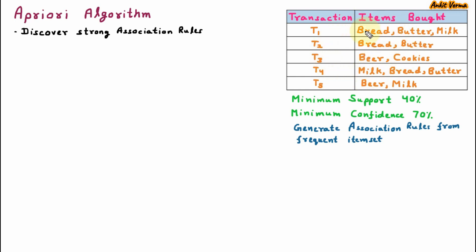Here we are given with a dataset in which we have transactions and items bought. There are five transactions. In each transaction, we have a combination of items which are bought together. In transaction 1, bread, butter and milk are bought together. Transaction 2 contains bread and butter. Transaction 3 contains beer and cookies. Transaction 4 contains milk, bread and butter. And transaction 5 contains beer and milk.